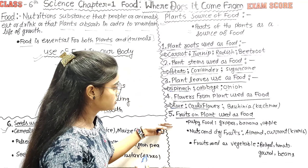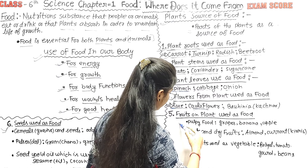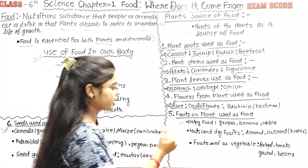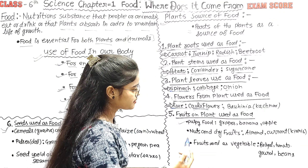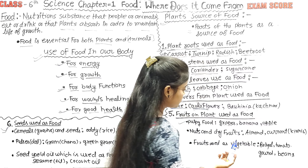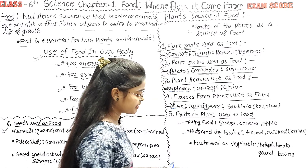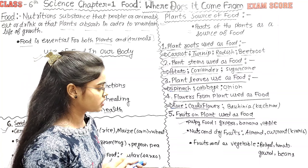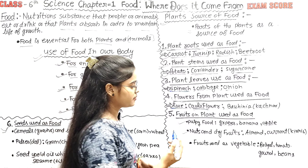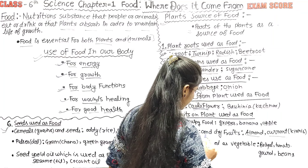The fifth point is fruits. The first type is juicy fruits — fruits with pulp such as grapes, bananas, and apples. The second type is nuts, which have a hard shell, such as almonds, cashews, and dried fruits.